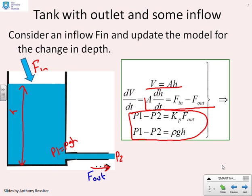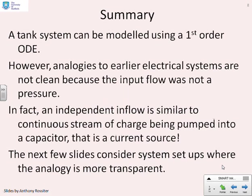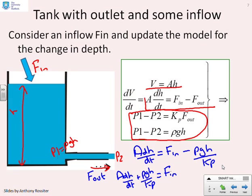Now f out is given by the same two expressions as the previous slides, so we won't dwell on that one. Let's just write what we end up with. So we've now got a dh/dt equals f in minus ρgh over kp. And if I put this together, what do you get? You've got a dh/dt plus ρgh over kp equals f in. Now, that does look like a first order differential equation, and therefore you might be saying, well, I'm quite happy with this. This seems to be analogous to the types of models that we've got before.